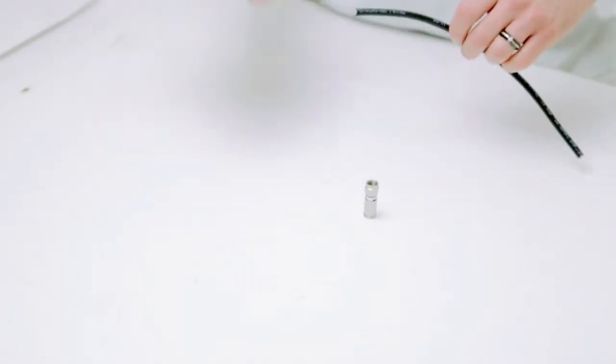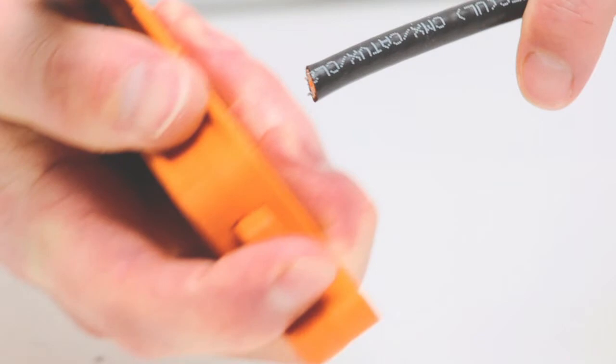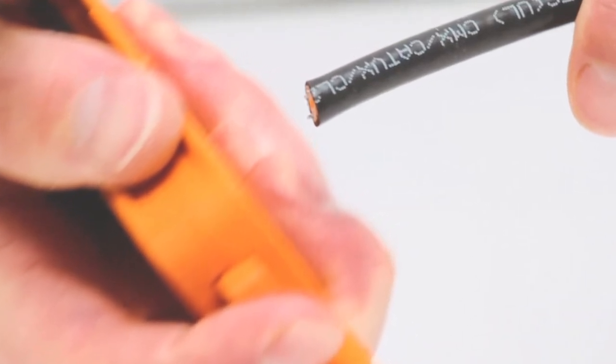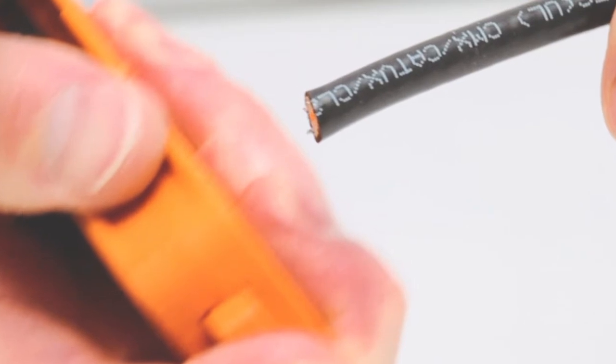To begin I need to prep my cable. To install the connector properly I need to leave a quarter inch of the center conductor exposed and also a quarter inch of the braid.